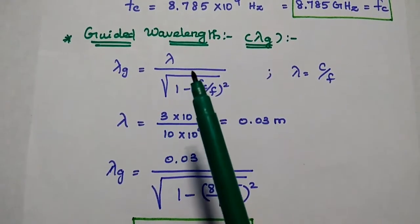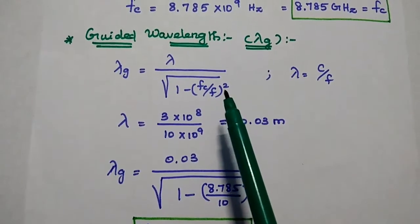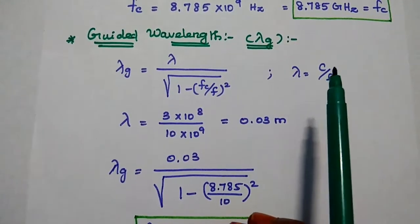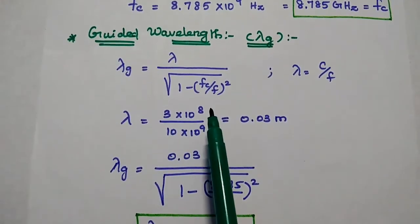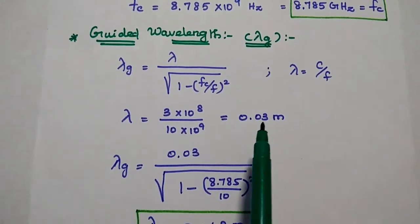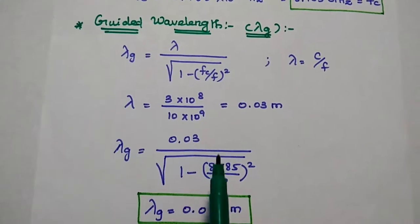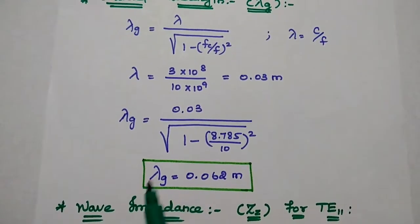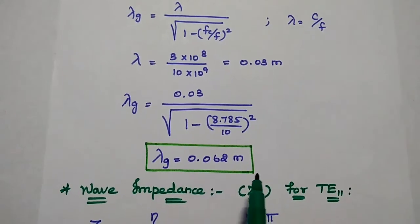Next, the guided wavelength λg = λ / √(1 − (f_c/f)²). Here we find the lambda value: λ = c / f = 3 × 10⁸ / 10 GHz = 0.03 m. Substituting this lambda value, the cutoff frequency value, and the operating frequency value, we get the guided wavelength as 0.062 m.